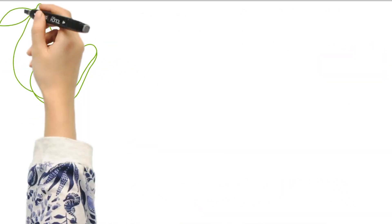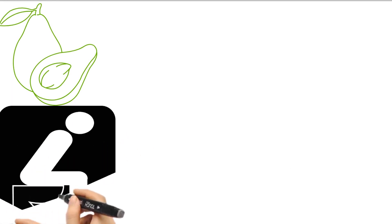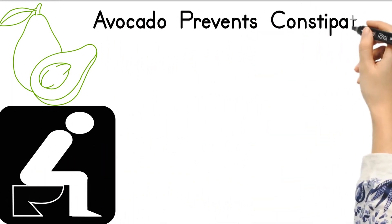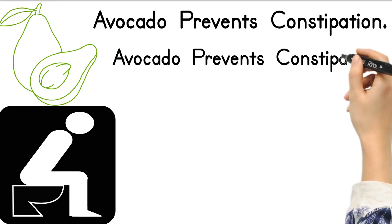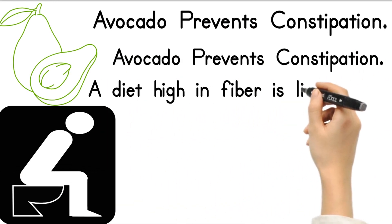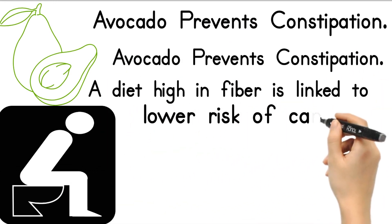Avocado prevents constipation. Avocado contains a lot of fiber. A diet high in fiber is linked to lower risk of cancer, hypertension, diabetes, and obesity, not to mention constipation.